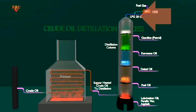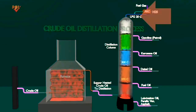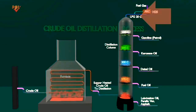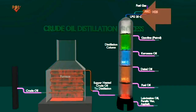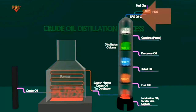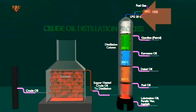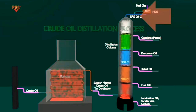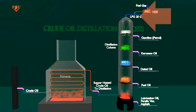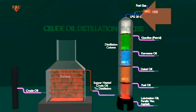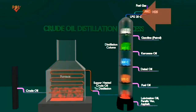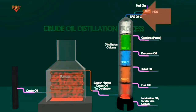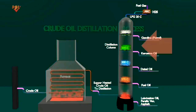Light products, or light ends, are further separated into propane, normal butane, and isobutane. This stream is often referred to as liquefied petroleum gas, LPG, and is sold as a cooking and heating fuel.